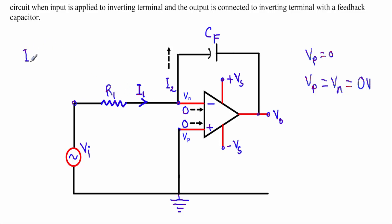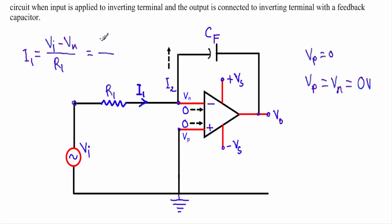To calculate I1: current always flows from higher potential to lower potential. VI is at higher potential, so I1 equals VI minus VN divided by R1. Since VN equals zero, I1 equals VI divided by R1. Now for I2, which is the current flowing through the capacitor CF.